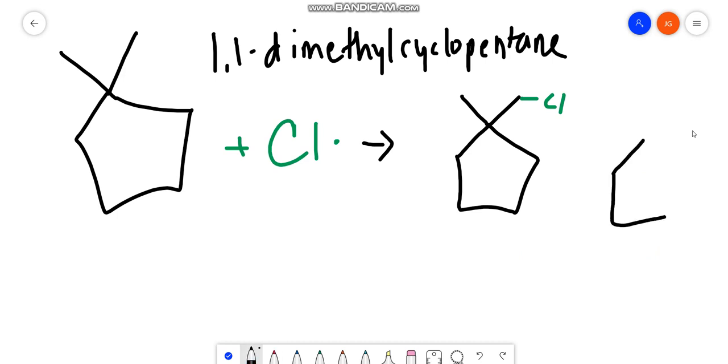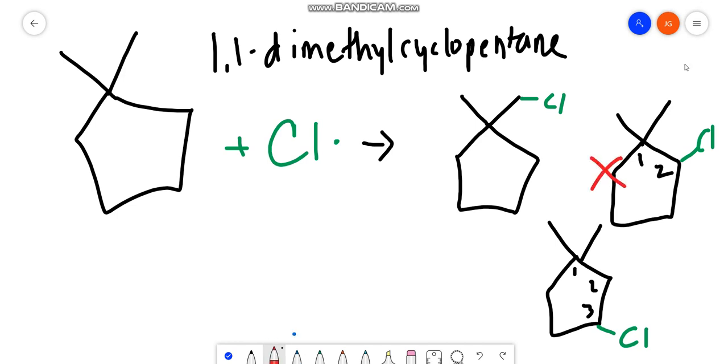We can draw one of the chlorines going here in the one, two carbon position. We can even draw a chlorine here in the one, two, three carbon position. And notice we are not going to add one here, because this would be the same as this. And we're not going to add one here, because it's going to be the same as this. Remember, we want to not repeat structures.